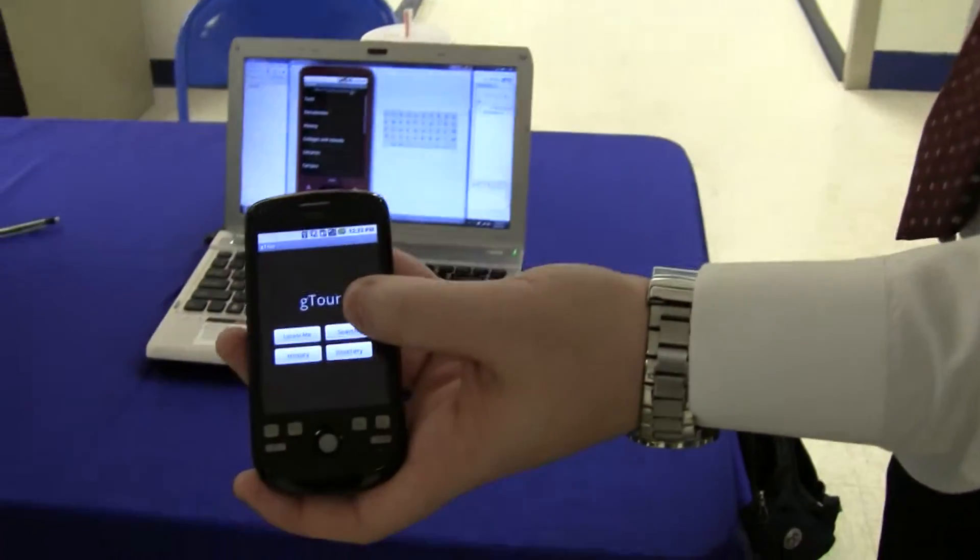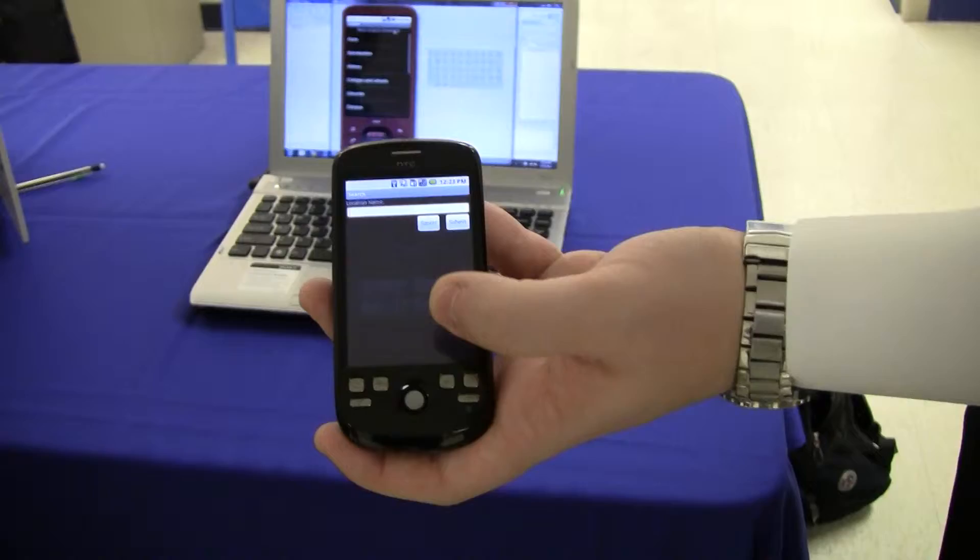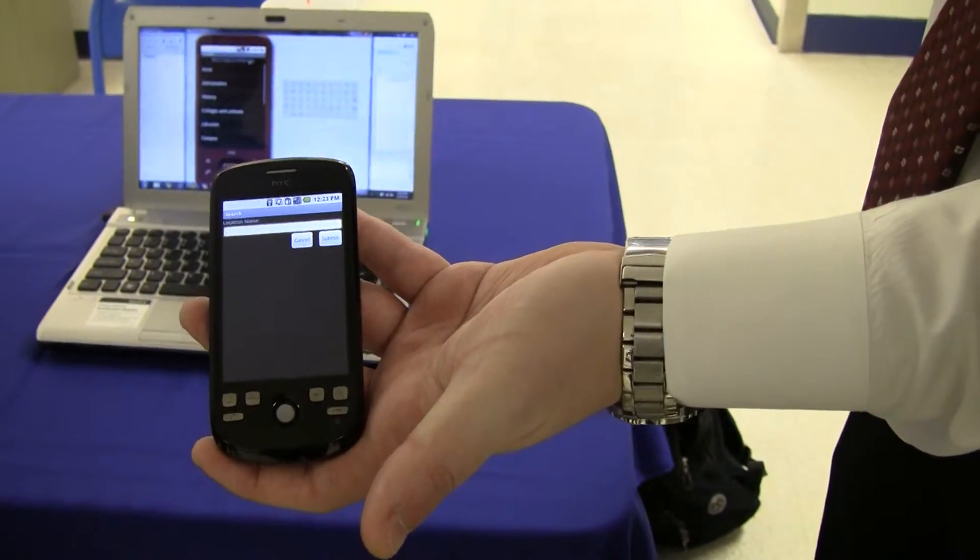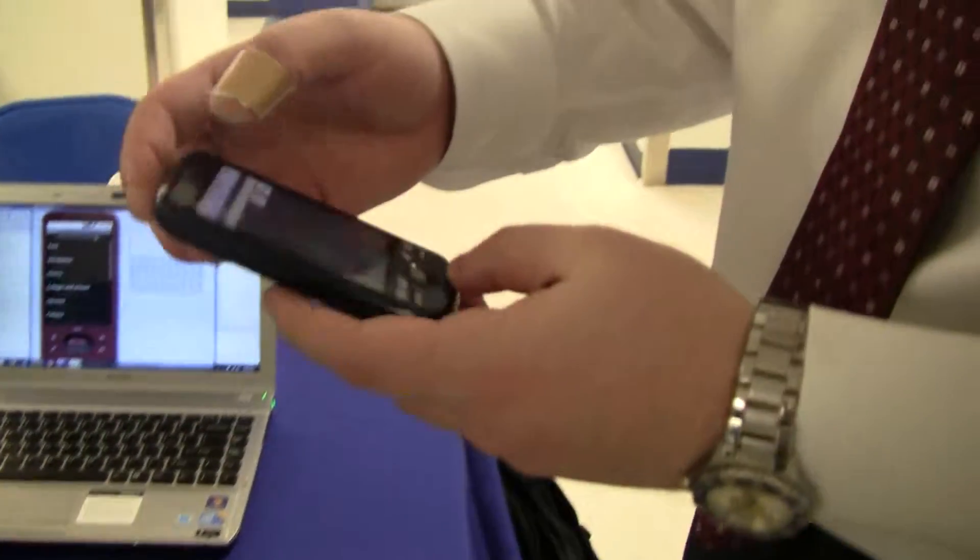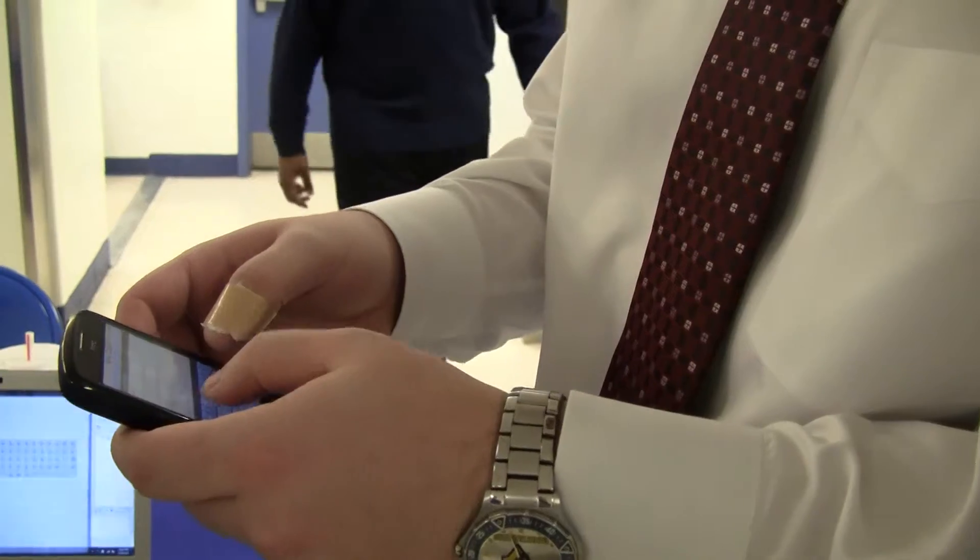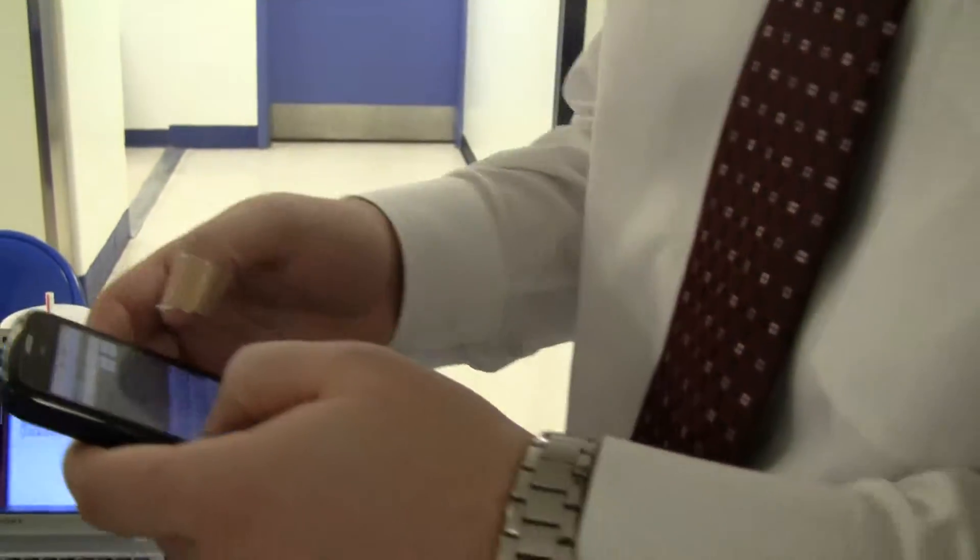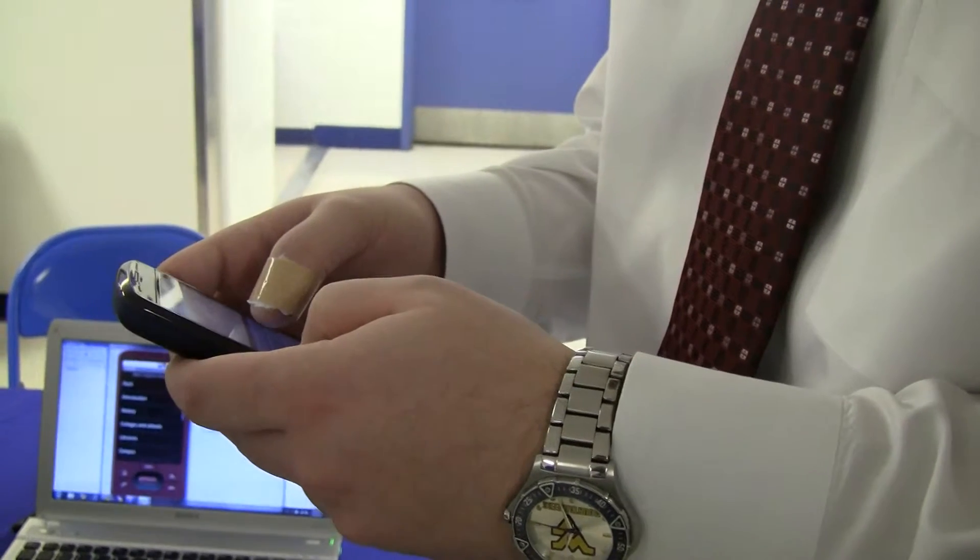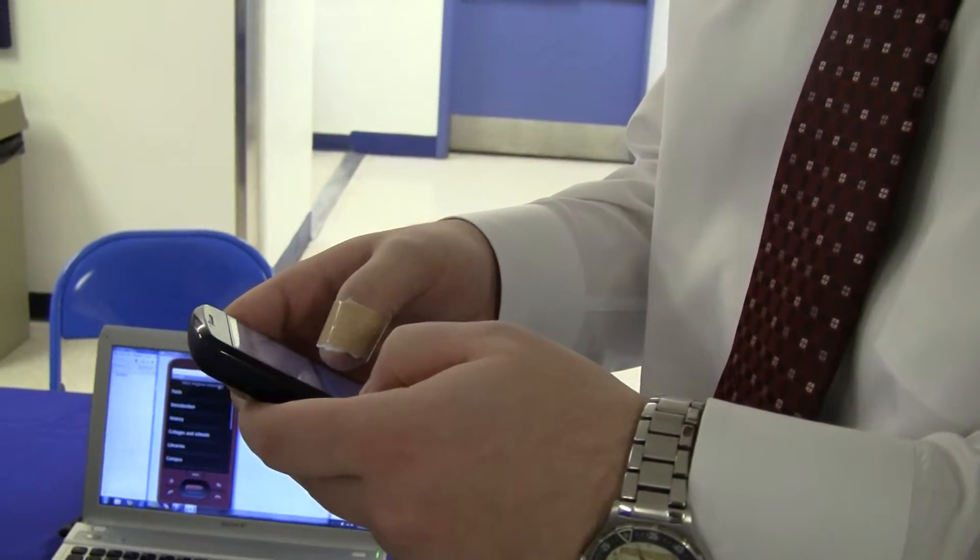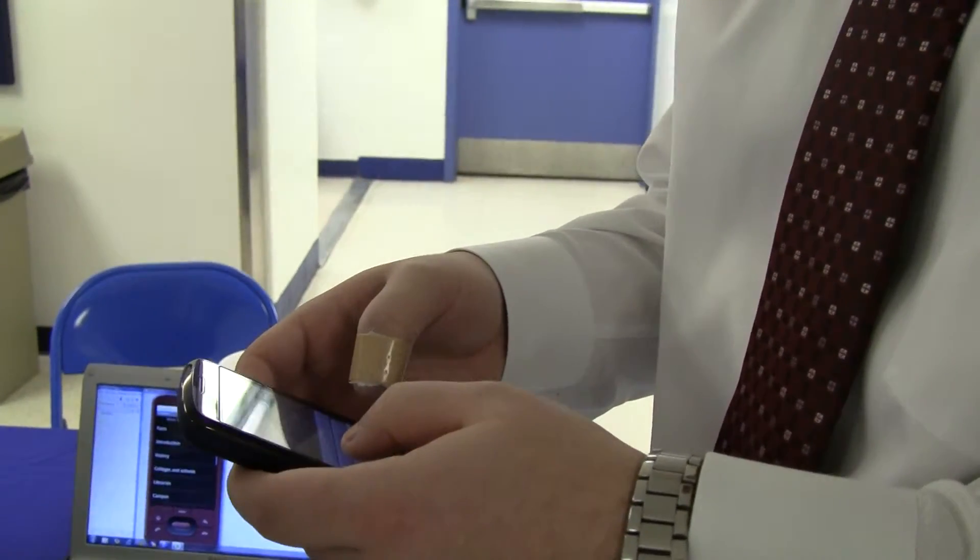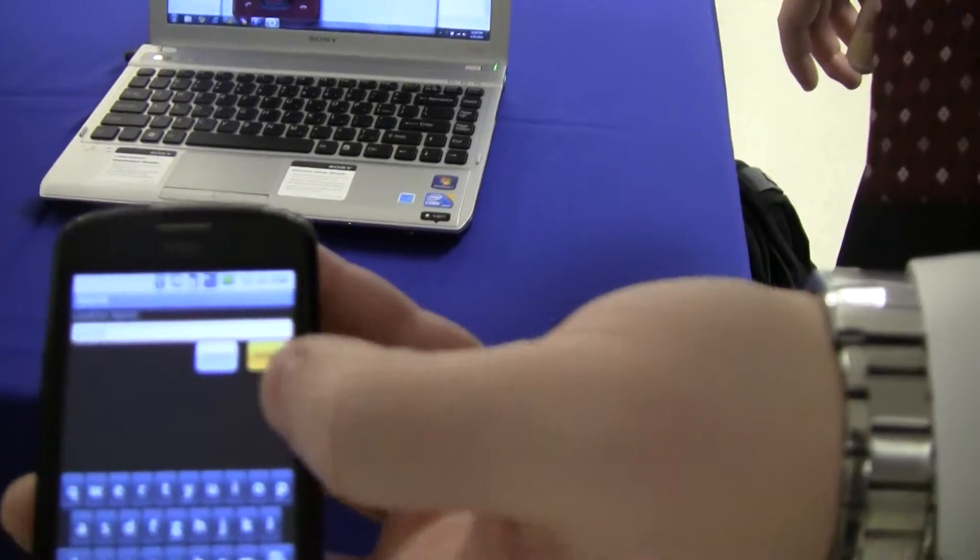The next thing that we want to do is search. So if we push search, we just get a blank box here. We can type in, pull this back, put in a location, entering it off the keyboard here. I can't type in this thing. So if we put in Paris and submit,